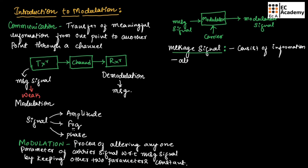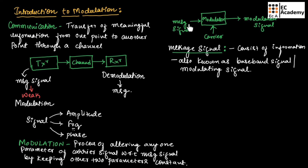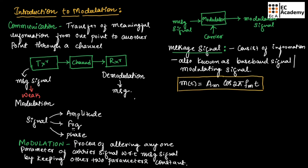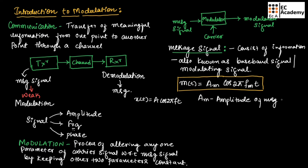The message signal consists of information or message that has to be transmitted over a channel. This message signal is also known as the baseband signal or modulating signal. Mathematically, we can write the message signal as m(t) = Am·cos(2π·fm·t), where Am is the amplitude of the message signal in terms of voltage and fm is the frequency of the message signal in terms of hertz.